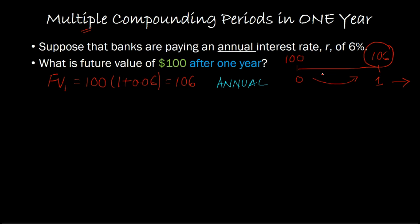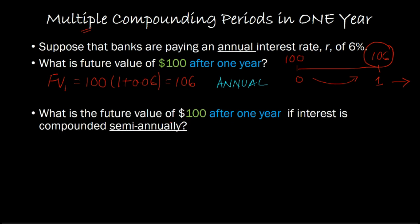Now let's consider a different situation. Suppose we're still interested in the future value of the same $100 exactly after one year, and the annual interest rate is still 6%, but the bank says that interest is now going to be compounded semi-annually. What that means is that when you put your $100 in the bank, the bank manager comes back to your account in the middle of the year — semi-annually, so twice a year. In the middle of the year, the bank asks how much interest you've earned. If the annual interest rate is 6%, then for the first six months you've earned basically 3%, so right around the midpoint you'd have about $103.